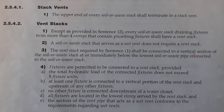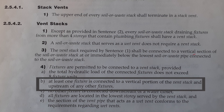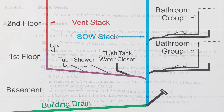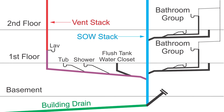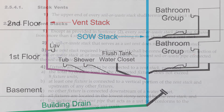Clause 2542, 4, part B: at least one fixture is connected to the vertical portion of the vent stack and upstream of any other fixtures. As you can see, I've got a lav connected to the vertical portion of the vent stack, and it is connected upstream of all other fixtures — so we've met that requirement.